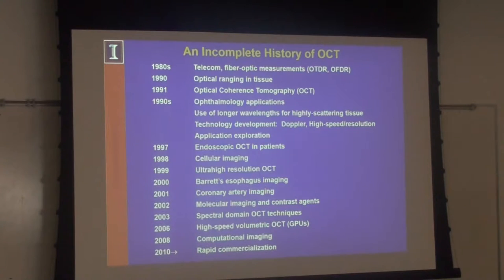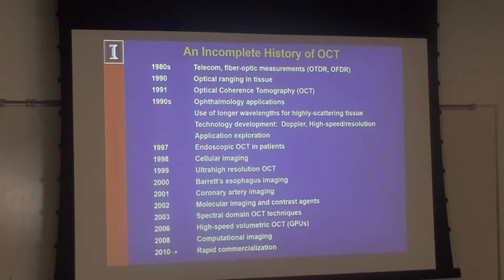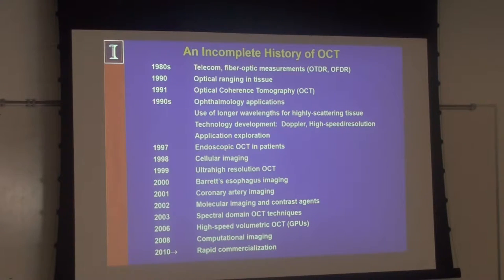OCT started in the 1980s with the telecom boom. Fiber optics were being strung across oceans and inevitably faults would occur. They developed optical time domain reflectometry and optical frequency domain reflectometry as ways of finding where fiber faults or fractures were. The essential idea is that you send down a pulse, wait for reflections to come back, and if there's a break in the fiber, it sets up a reflection. Through frequency or time analysis you can measure where that fault was and send a ship out to repair it.